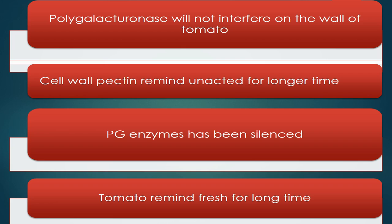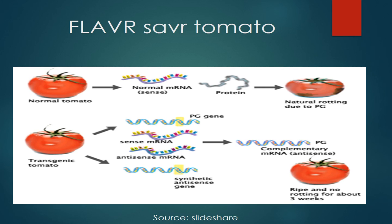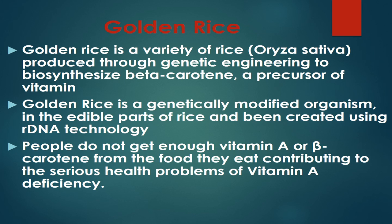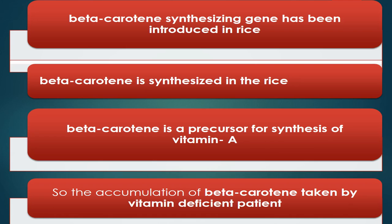The tomato remains fresh for a long time. Golden rice is a variety of rice produced through genetic engineering to biosynthesize beta-carotene, a precursor of Vitamin A. It is a genetically modified organism created using rDNA technology in the edible portion of the rice. Many people suffer from Vitamin A deficiency, so the beta-carotene synthesizing gene has been introduced into the rice. Beta-carotene is yellowish in color — that is why it is called golden rice. As beta-carotene accumulates in the rice, it serves as a precursor for Vitamin A synthesis, addressing deficiency in those who consume it.